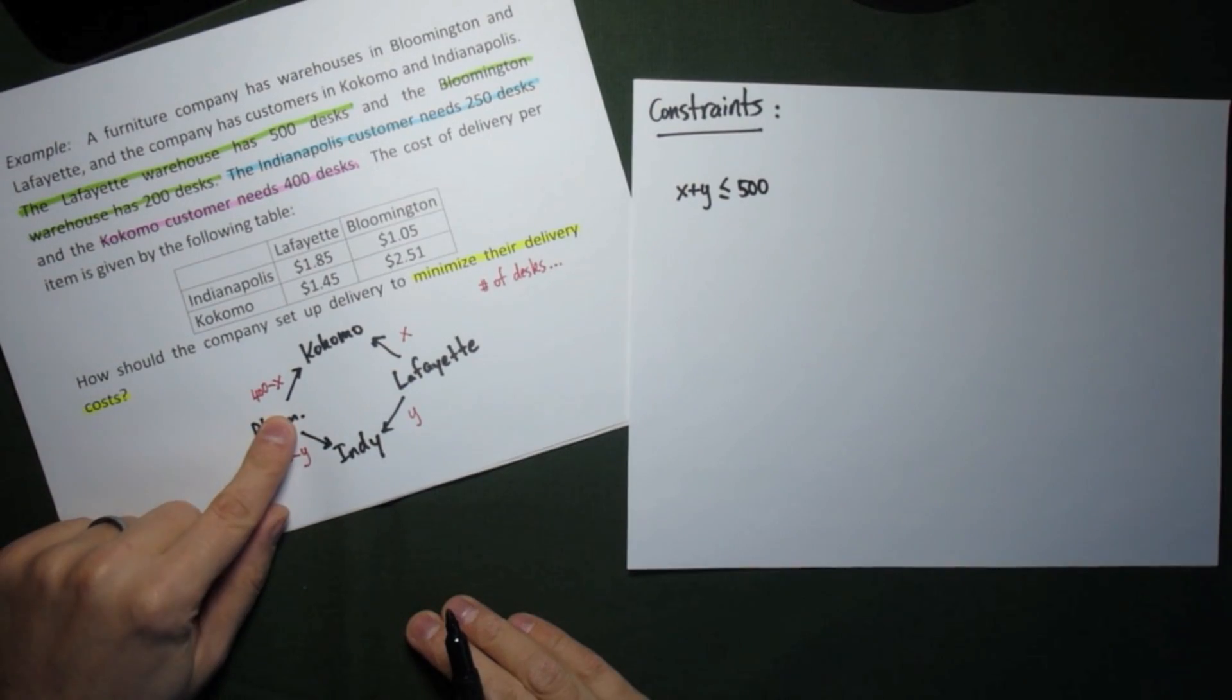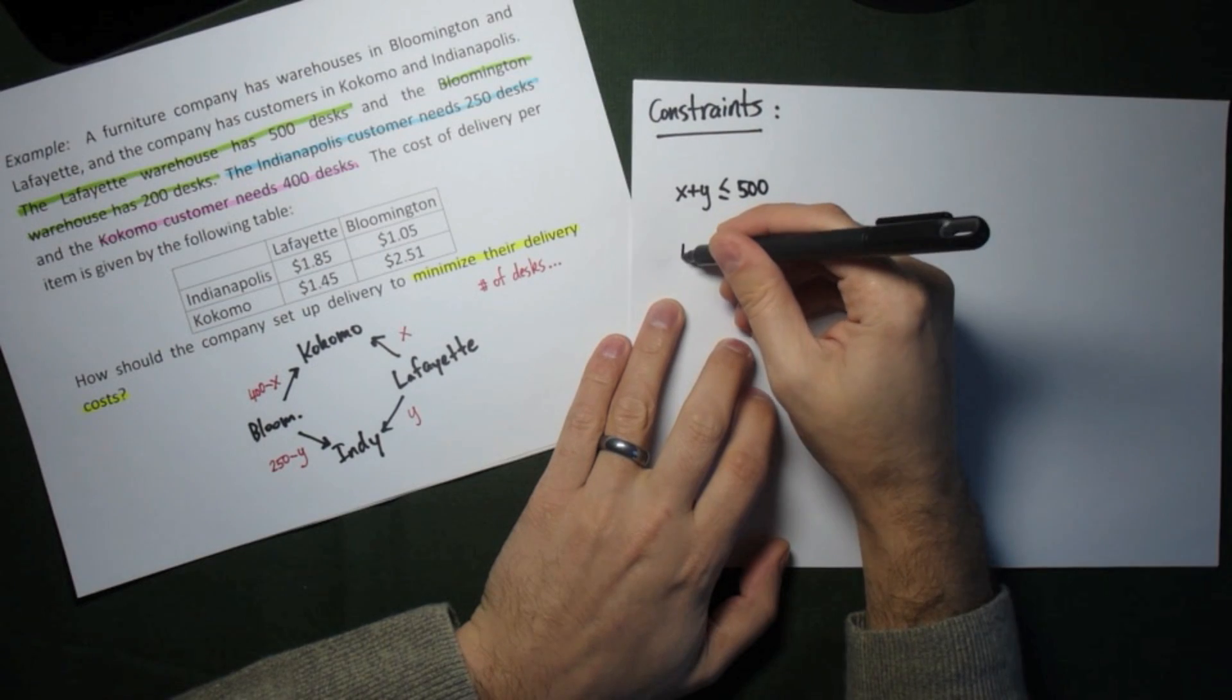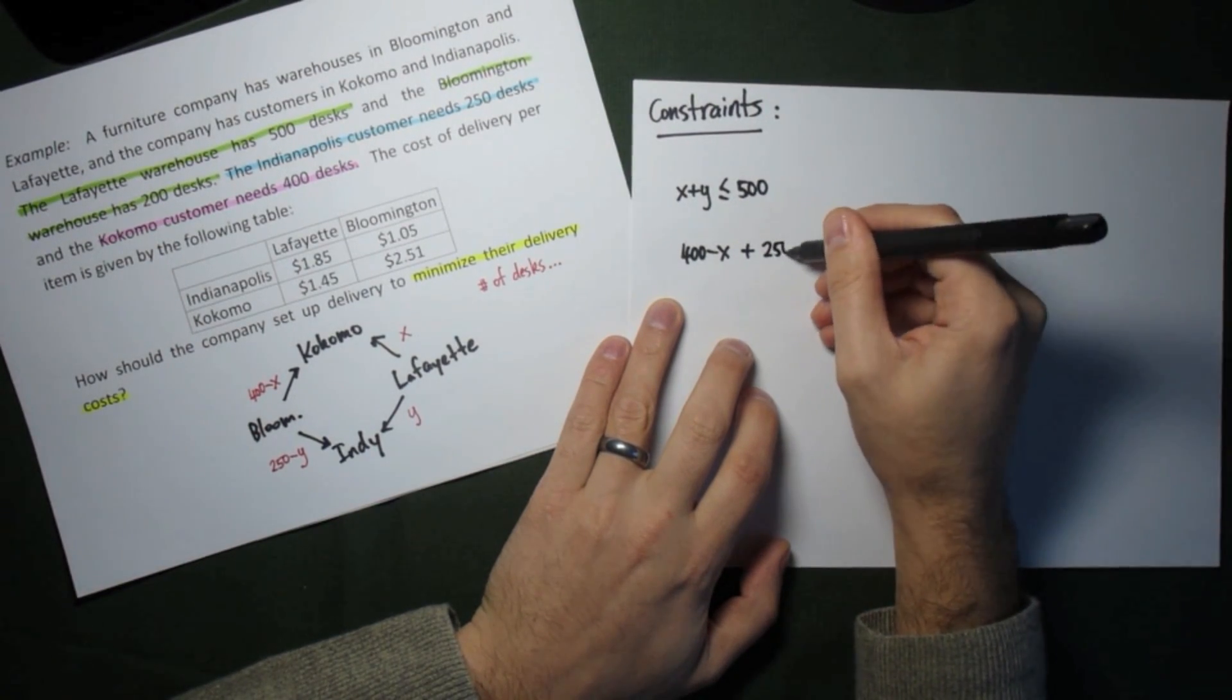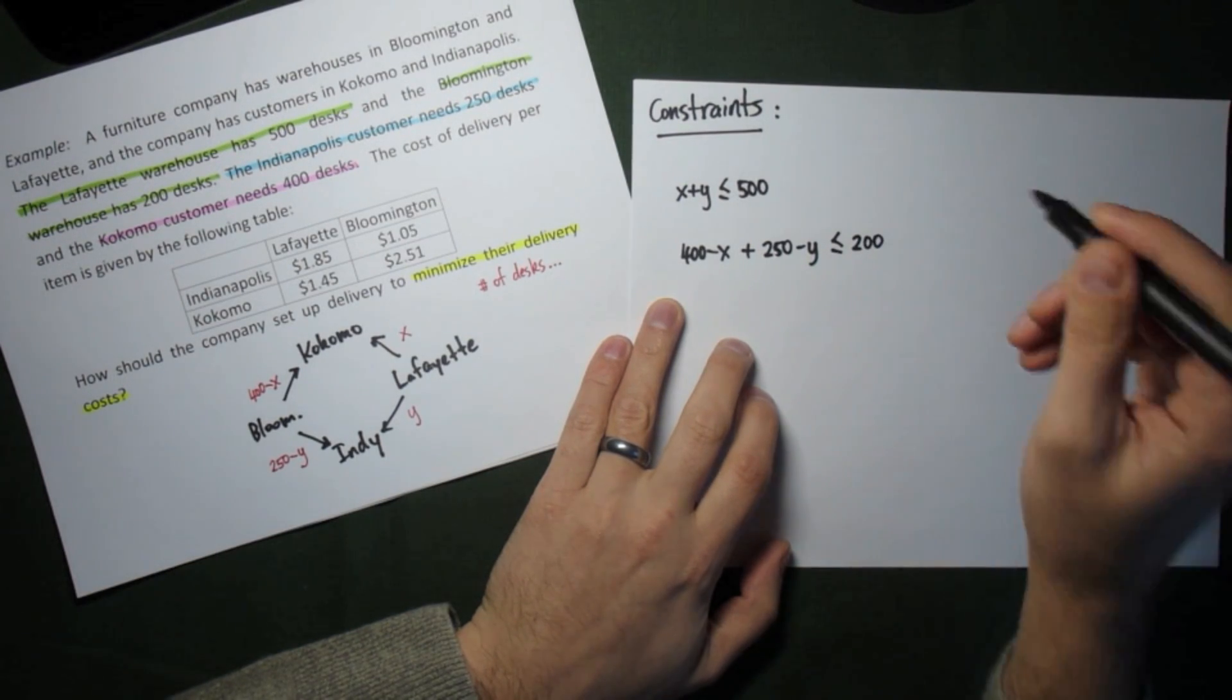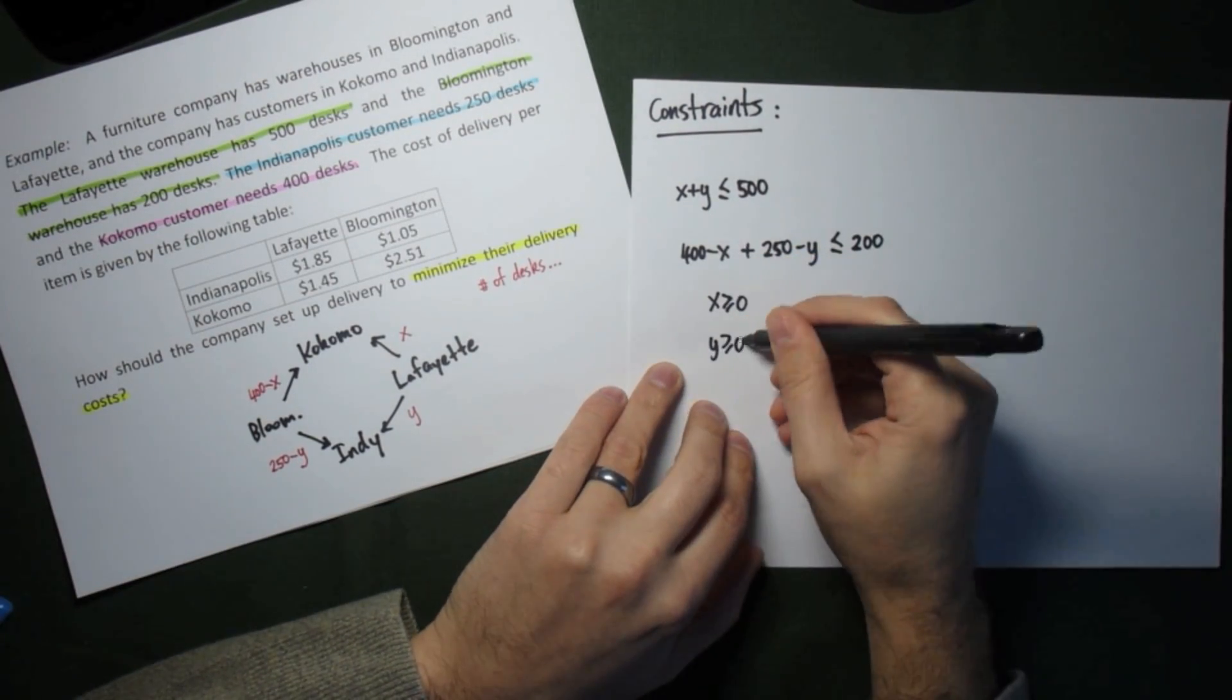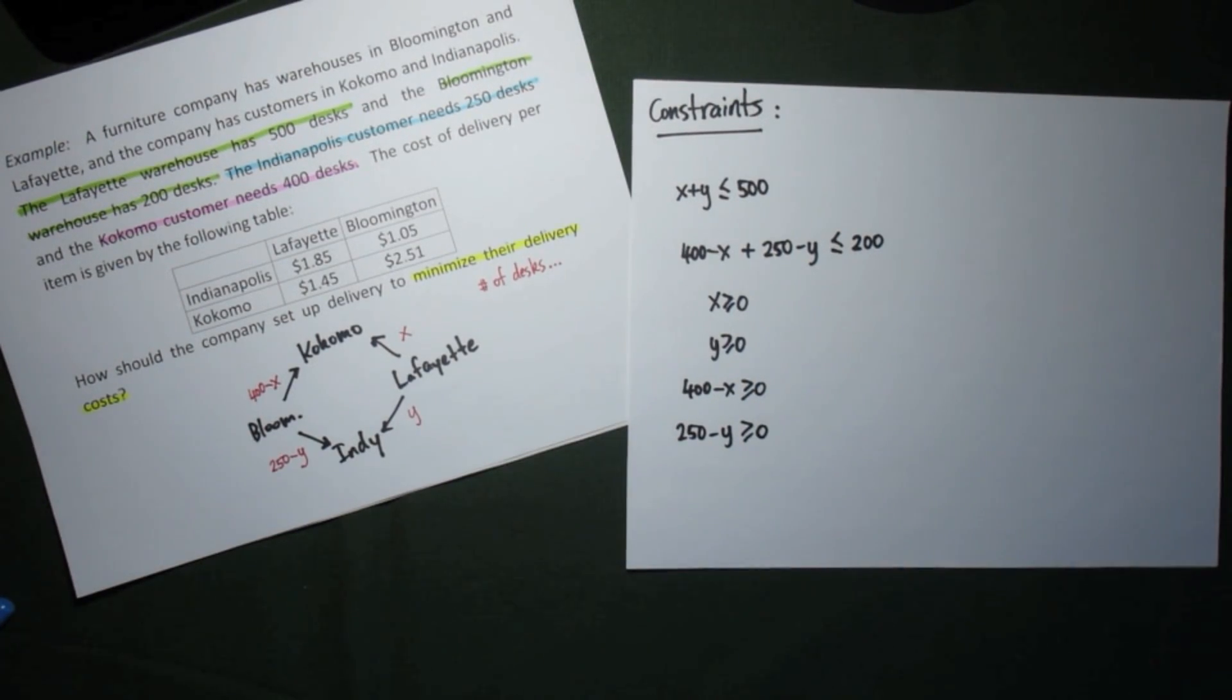We can do the same for the other warehouse. Bloomington has 200 desks to ship out, and so we can write down our constraint. Notice that we are going to use the full variable, the 400 minus x and the 250 minus y, as the amount of desks shipped out of Bloomington and Kokomo. Finally, the amount of desks that we ship can't be negative, so all four variables have to be greater than or equal to zero, including the full variables for the desks out of Bloomington.